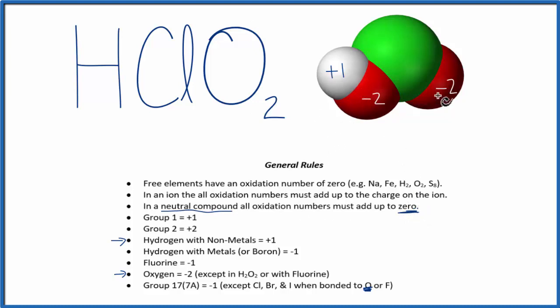So think of it this way. We have plus one, minus two, and minus two. That gives us a total of minus three. If we add to that the oxidation number for the chlorine, that should equal zero. So minus three and plus three, that equals zero. So the oxidation number on the chlorine is plus three.